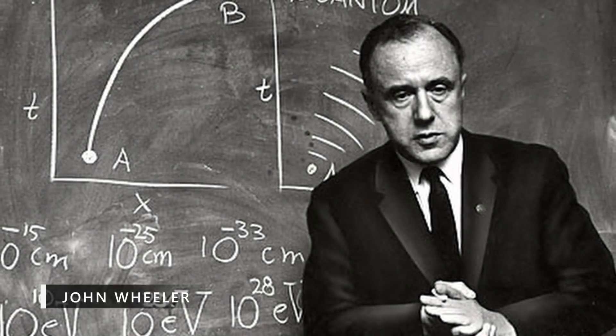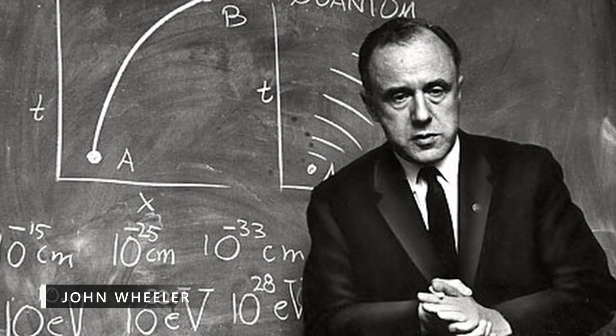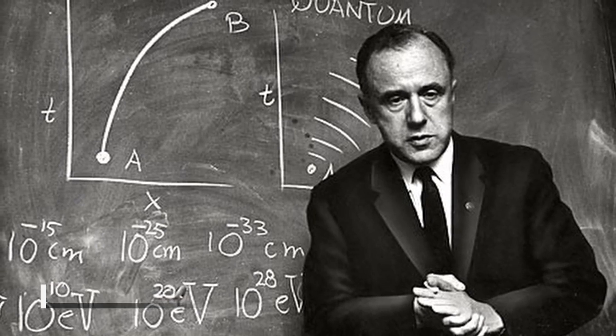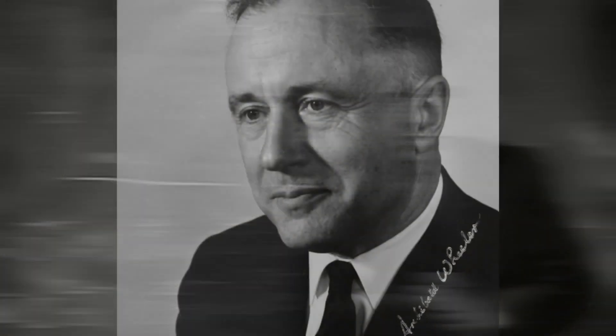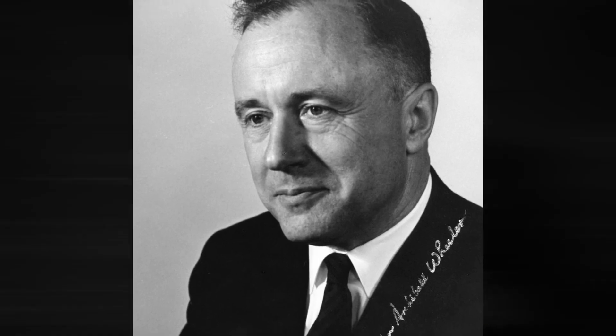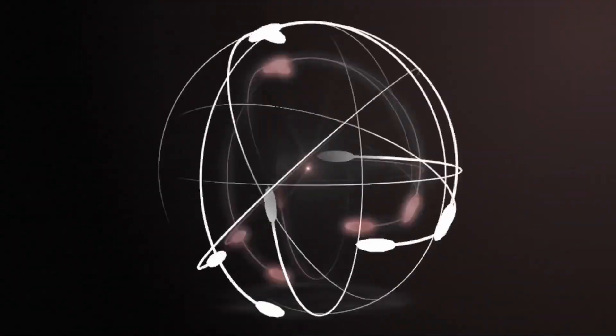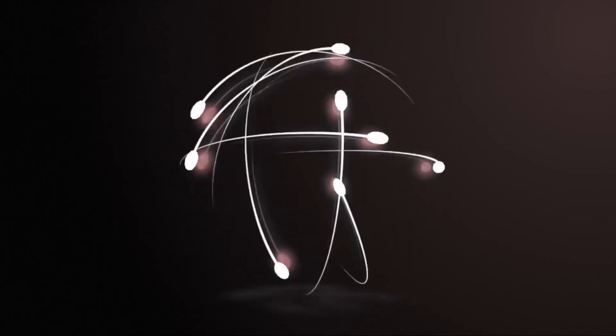In 1940, physicist John Wheeler came up with a novel new theory that might explain why all electrons are identical. According to him, the reason that every electron is the same is because every electron is the same electron. The electron moves back and forth in time and interacts with itself an infinite number of times, producing an infinite number of electrons.